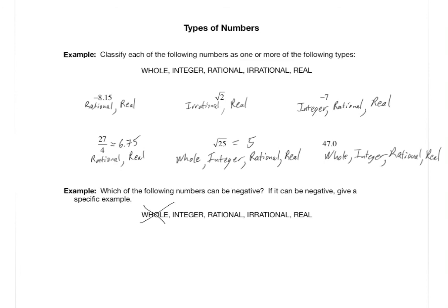Can integers be negative? Yes — integers are the whole numbers and their additive opposites, the negative versions. For example, negative 7 is an integer. Can rational numbers be negative? Of course — for example, negative one-third is rational because it equals negative 0.333 repeating, an infinite decimal with a repeating pattern. Can irrational numbers be negative? Sure — negative pi is an example; pi is irrational, so negative pi is also irrational. And real numbers can certainly be positive or negative.